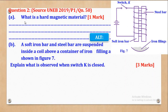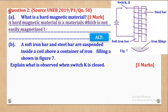Now we shall go to Question 2, which came from UNEB 2019 Paper 1, Question 50. Part C says: what is a hard magnetic material? It carries one mark.